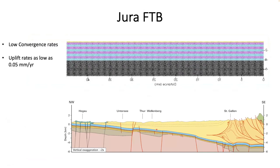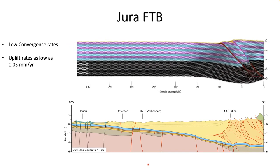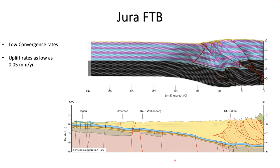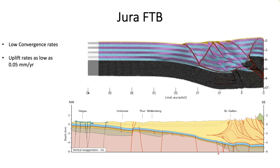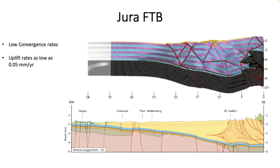One more real-world example: the young Jura fold and thrust belt, with the southeast side in Switzerland moving northwest into Germany, overlies relatively ductile crust. The Jura has very low convergence rates and uplift rates of about 0.05 mm/year. A model with a high isostatic rate and significant isostatic subsidence is shown — flipped to better match the profile — and shows the same processes: subsidence where thickening is greatest, deformation focused in a narrow zone, complex structures forming, and little activity further out.